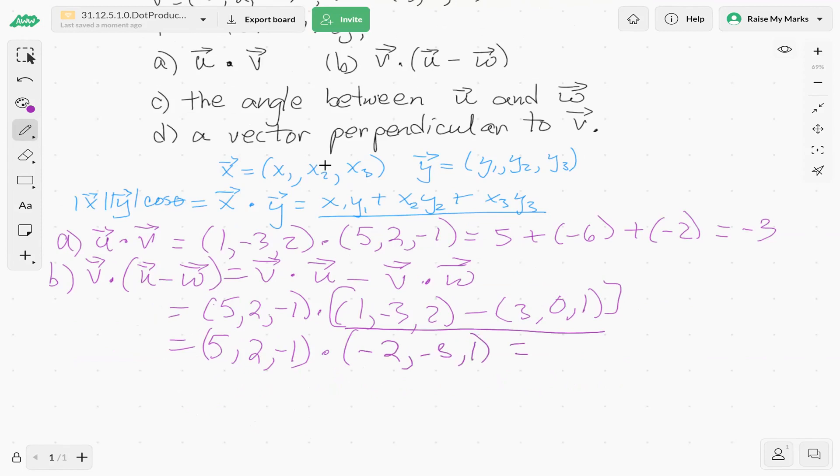So now we're going to take the dot product of these two vectors, and we have 5 times negative 2 is negative 10, plus 2 times negative 3, negative 6, plus negative 1 times 1, which is negative 1. And what do we get? We get negative 10 minus 6 minus 1, negative 17.